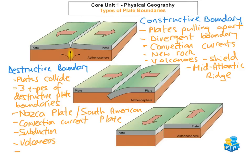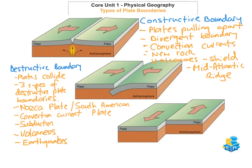At these destructive plate boundaries you also get earthquakes. And the last feature that can be present at destructive plate boundaries is fold mountains. Fold mountains occur when you have continental and continental plates in collision with each other, causing the plates to buckle up. An example would be the Himalayas.